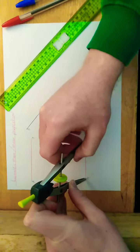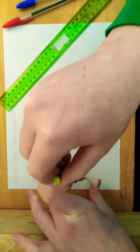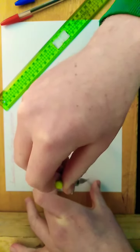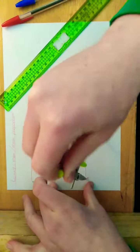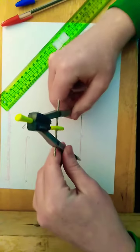So you want to get your compass just over halfway and swing it up in an arc and swing it down. Just want to do the same thing on the other side.